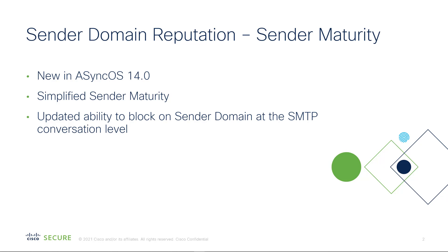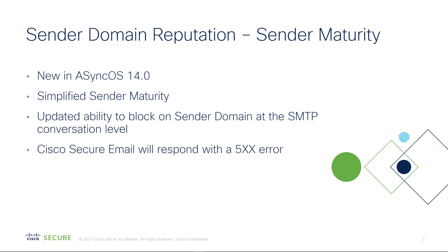The largest update is that we now have the ability to block these bad domains coming from these shared spaces at the SMTP conversation level. So when they set up their connection to communicate with your Cisco Secure Email server, we will respond with a 500 error — a hard fail — so they know that we do not want to be talking to that domain. It will simplify your space from your message tracking or even if you're doing a threat response. You're not going to be flooded with all of these emails that we would block later in our pipeline.